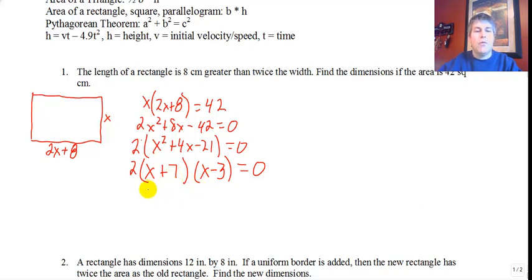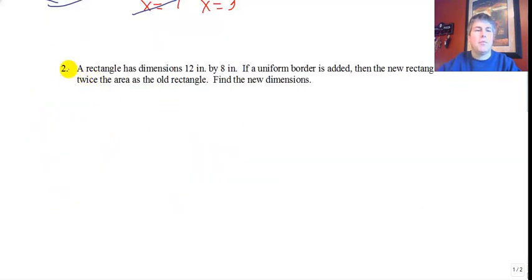We set each factor equal to 0, so we'll set x plus 7 equal to 0 and solve for x. We get x equals negative 7. x minus 3 equals 0, x equals positive 3. Since our unknown is the length of the side of the rectangle, we can eliminate negative 7 as a possibility. So our dimensions are 3 and 2 times 3 plus 8, or 14, so our dimensions are 14 by 3.